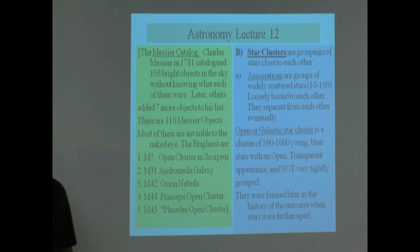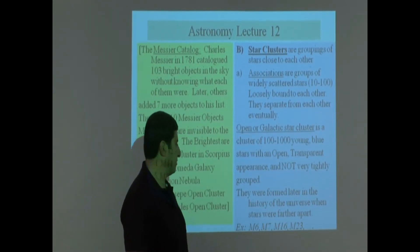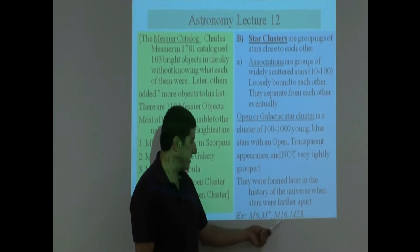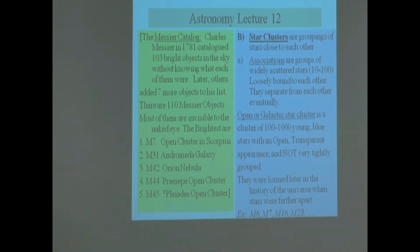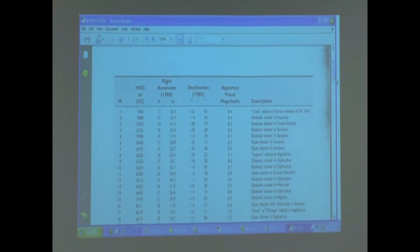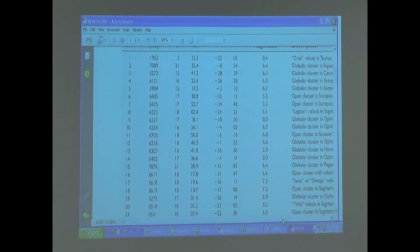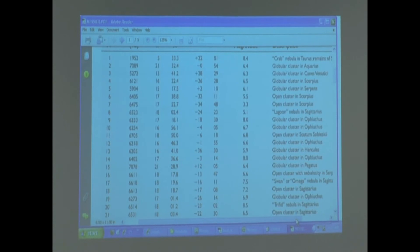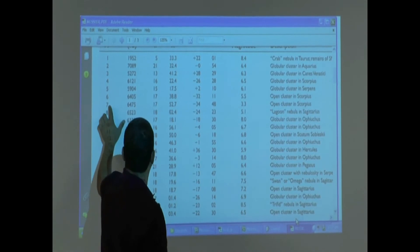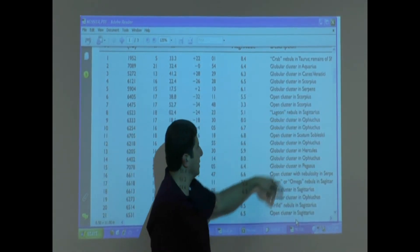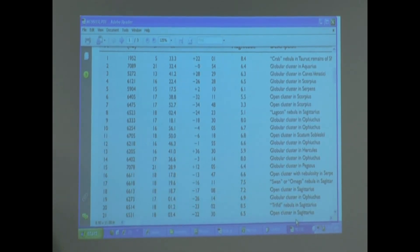From the Messier catalog, if we want to know which ones of those are open, these would be some examples of them. M6, M7, M16, M23, those are all open clusters. You see here, M6, and you go over, open. M7, you go over here, open. So whenever it says open cluster, those are examples of open clusters.